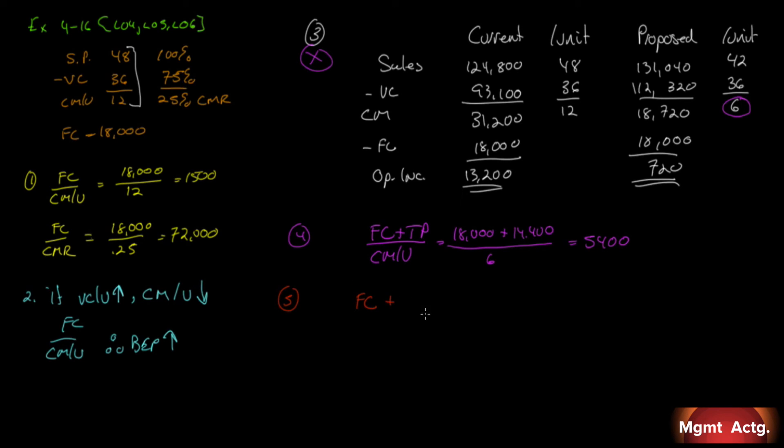Well, that is our fixed cost plus, we need our target profit before tax. Our target profit before tax is our net income divided by 1 minus the tax rate. We know that, right? Divided by contribution margin per unit. Contribution margin per unit.